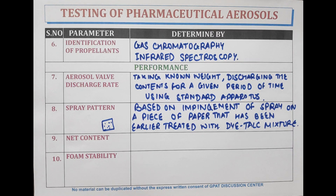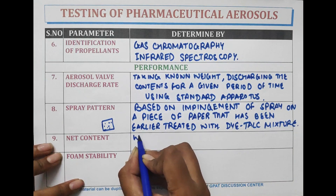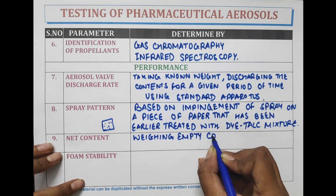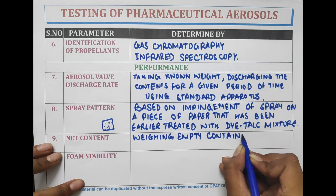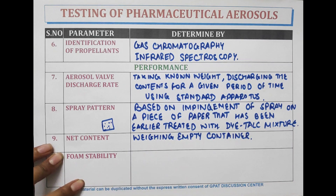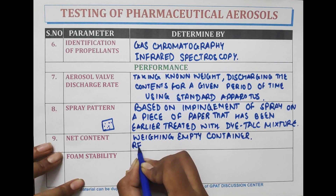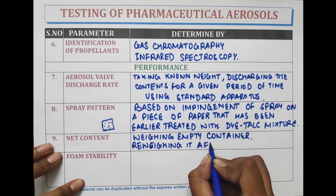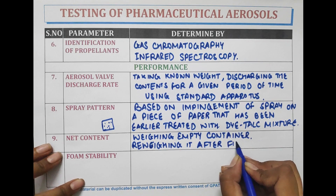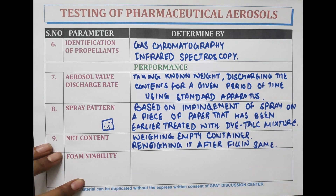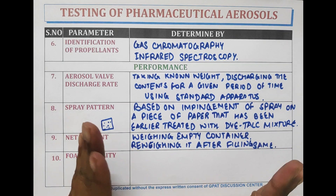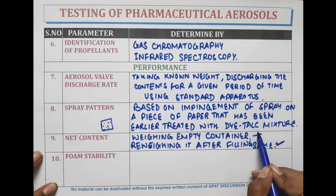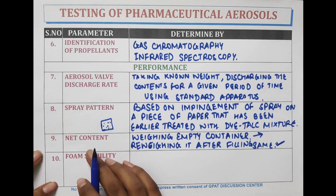Another evaluation is net content. The net content is determined by weighing the empty container and then reweighing it after filling with the same container. When we reweigh the container after filling and subtract the empty container weight, we will get to know the content of the aerosol.